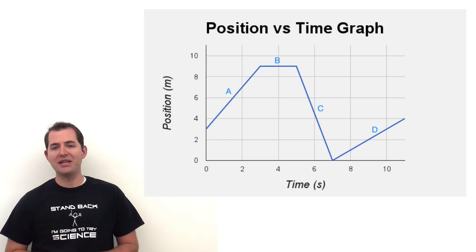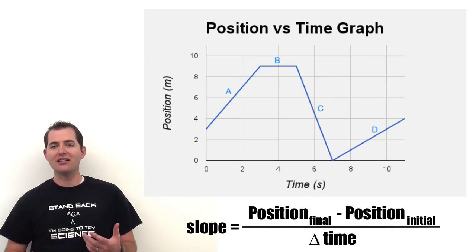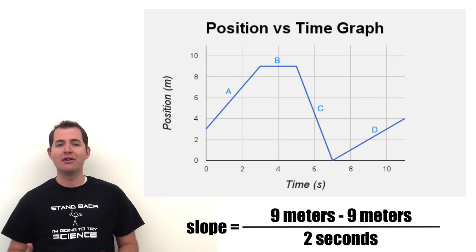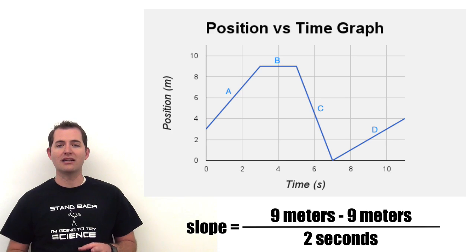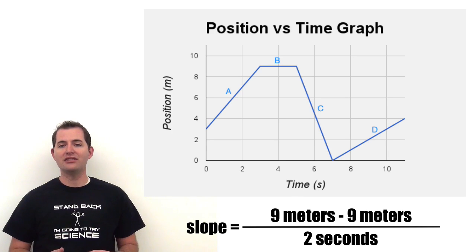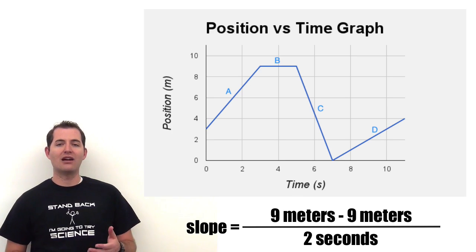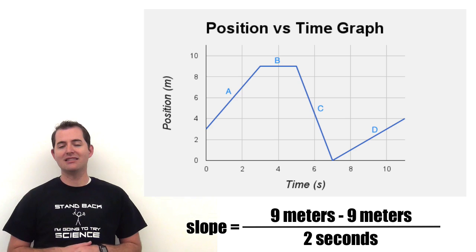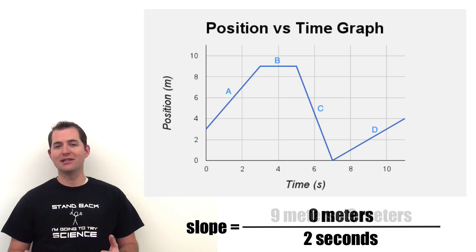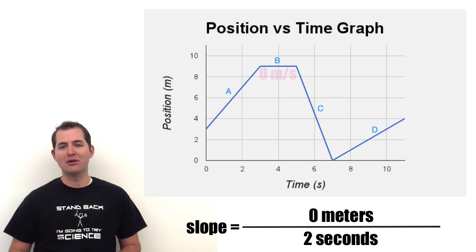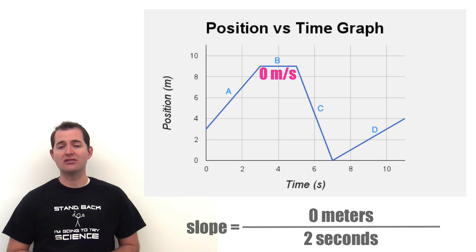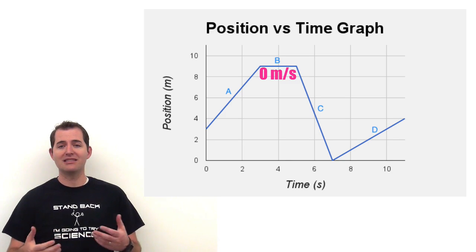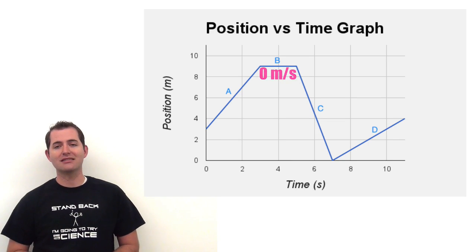Let's take a look at section B. Here we have a change in position equal to zero — it doesn't change its position at all over those two seconds. If we look at our slope equation, rise over run, the rise in this situation is zero. That gives us a slope of zero, meaning the object didn't change its position during this time. It was standing still.